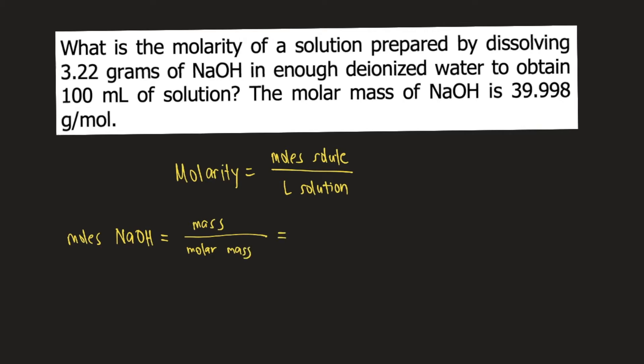According to the problem, the mass of NaOH is 3.22 grams, and the molar mass of NaOH is 39.998 grams per mole. So 3.22 divided by 39.998 equals 0.0805 moles.